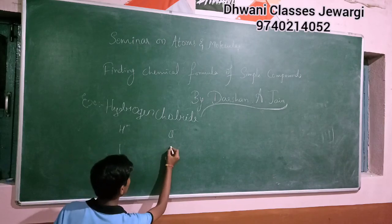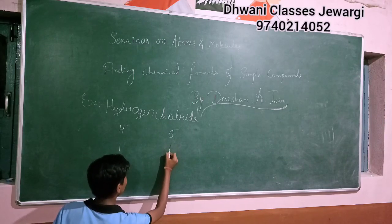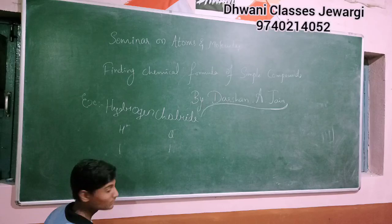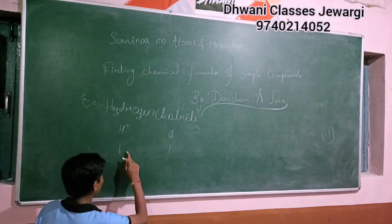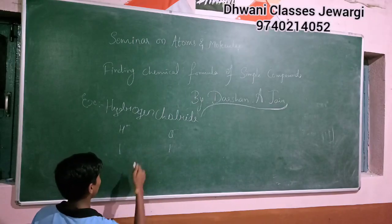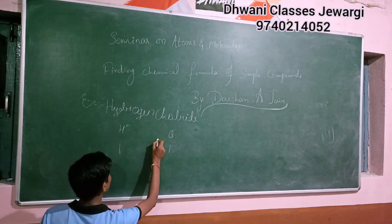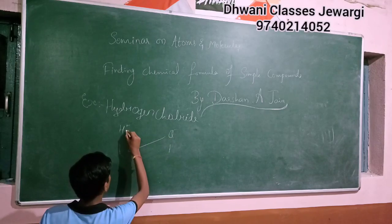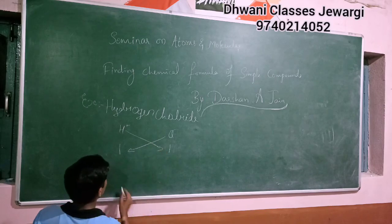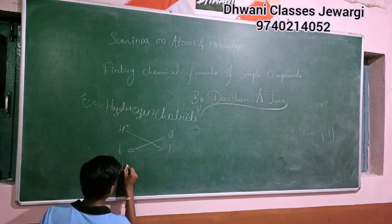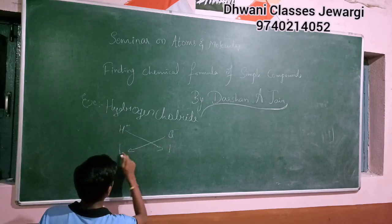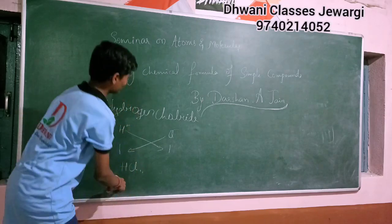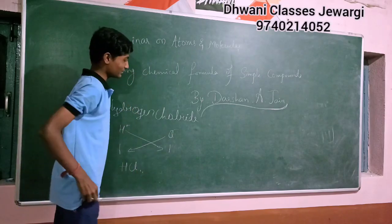Valency of chloride: one, minus one. Valency one is right. And now cross multiply. H into one, Cl into one. This is the chemical formula of hydrogen chloride: HCl.